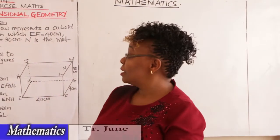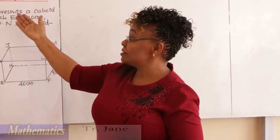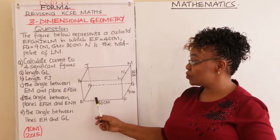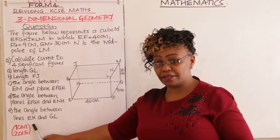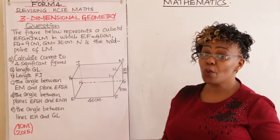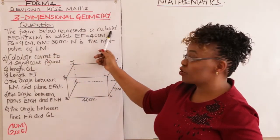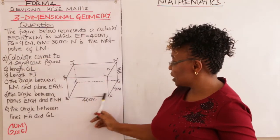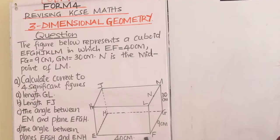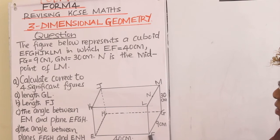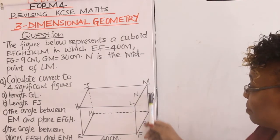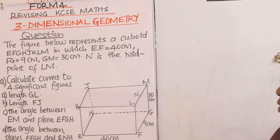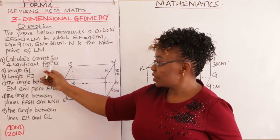Welcome again to this class. We are covering KCSC mathematics from the topic three-dimensional geometry. We have a question involving a cuboid, which has been appearing since 2015. The figure below represents a cuboid where EF is 40, FG is 9, and GM is 30 centimeters. N is the midpoint of LM.